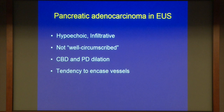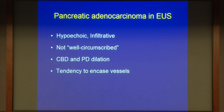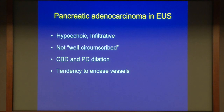Let's start with pancreatic adenocarcinoma. Pancreatic cancer has some typical features on EUS. We all know it's a hypovascular tumor, so it's pretty hypoechoic — a little bit darker when compared to the surrounding parenchyma. It's very infiltrative, not a well-circumscribed lesion, poorly marginated, and you often see common bile duct or pancreatic duct dilation, with a tendency to encase vessels.